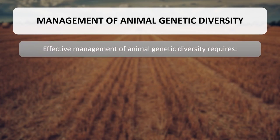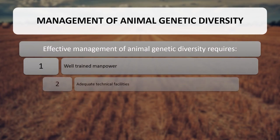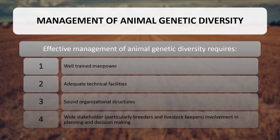Effective management of animal genetic diversity requires well-trained manpower, adequate technical facilities, sound organizational structure, and wide stakeholder involvement — particularly breeders and livestock keepers — in planning and decision making. Unfortunately, these prerequisites are largely lacking in most developing countries: 48% of the world's countries report no national-level in-vivo conservation program and 63% report no in-vitro program. Similarly, in many countries structured breeding programs are absent or ineffective.